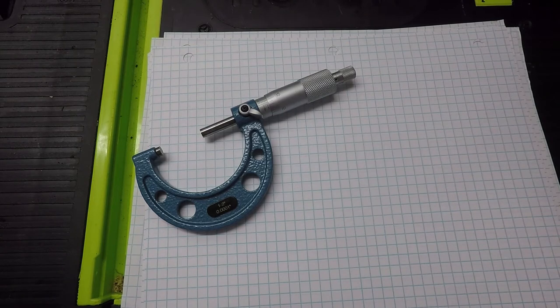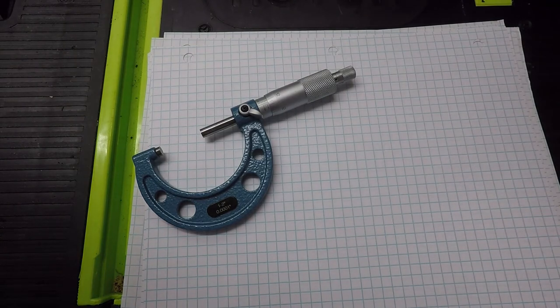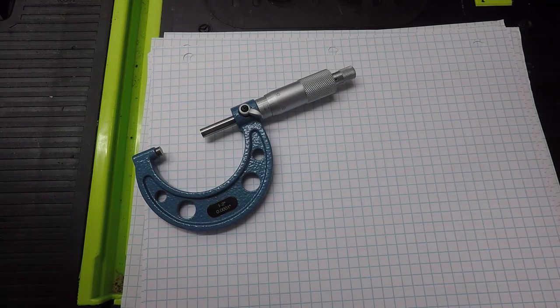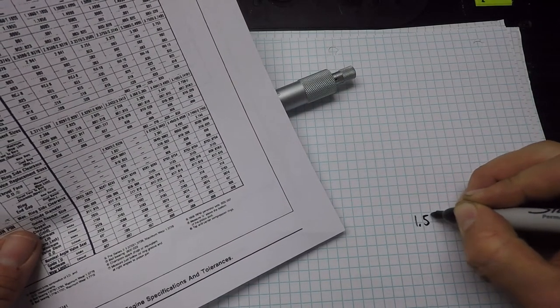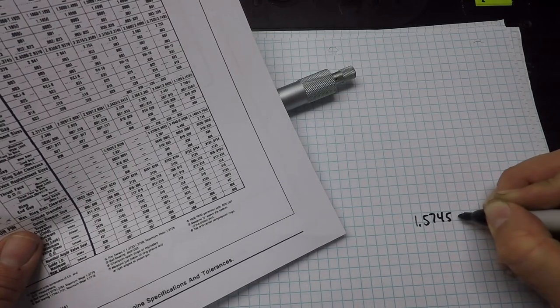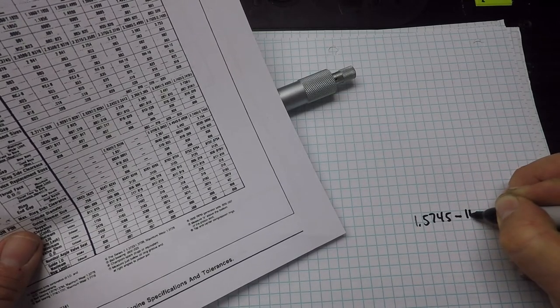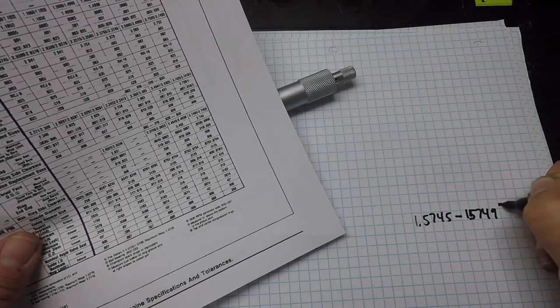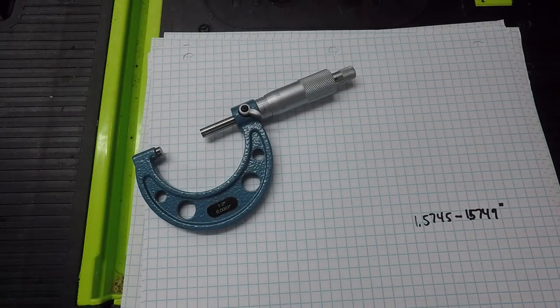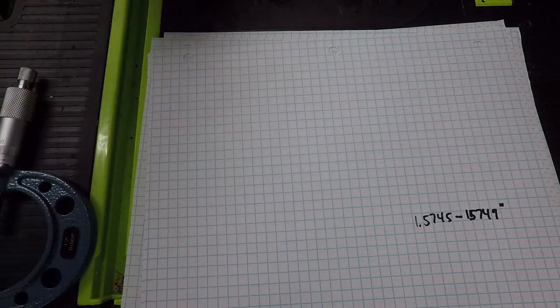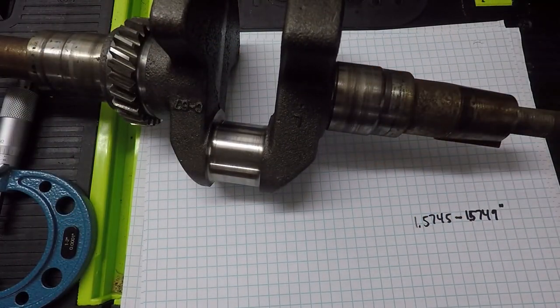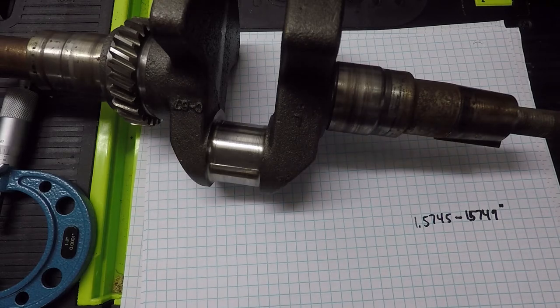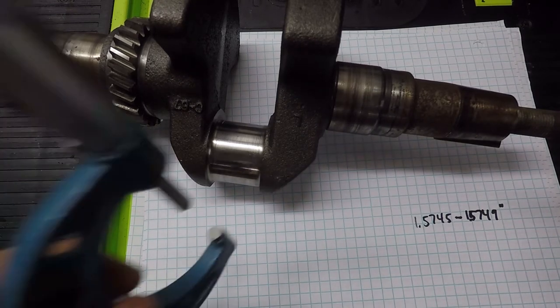All right. So what we're going to use for an example is a small engine crankshaft that I have, and we're going to take a measurement off that, which has a spec of somewhere between 1.5745 and 1.5749 inches. Part of this crankshaft that I'm talking about is right here. So let's go ahead and take our measurement.